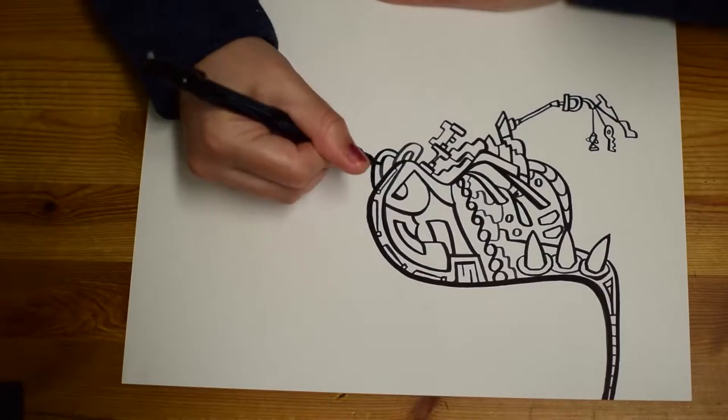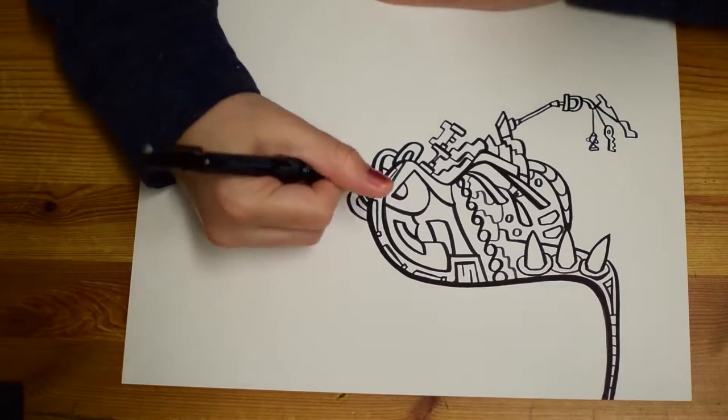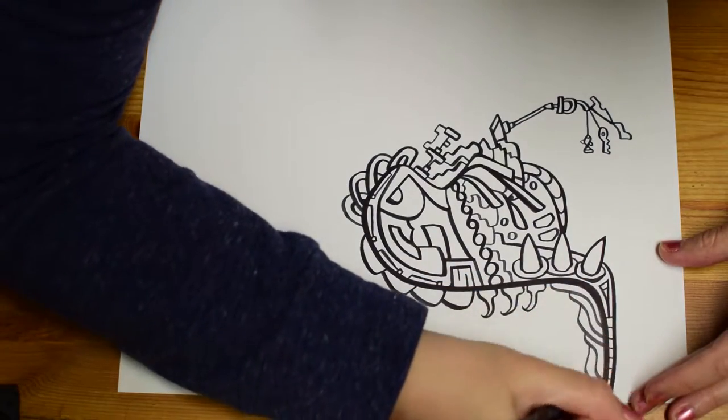So when I was four, there were eight colors. We had the rainbow, black, and brown. That was it in a box of Crayola crayons.